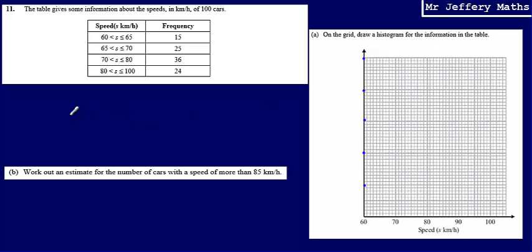So the first thing that we need to recognise here is the fact that we've been asked to draw a histogram. Now when we've been asked to draw a histogram, what we then need to remember is that with our histograms, our frequency is proportional to the area of the bars that we're going to draw. So the larger the area is, the greater the frequency will be.